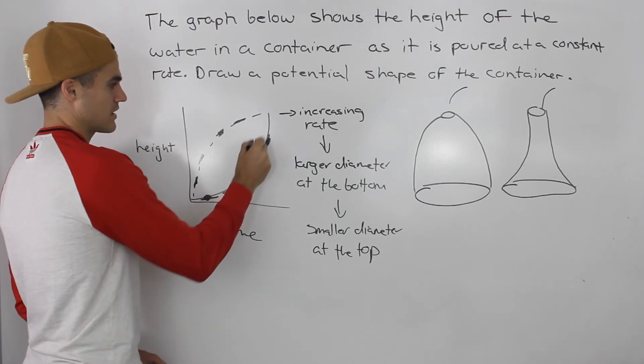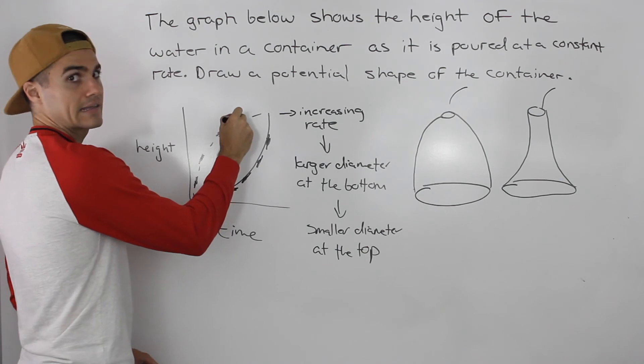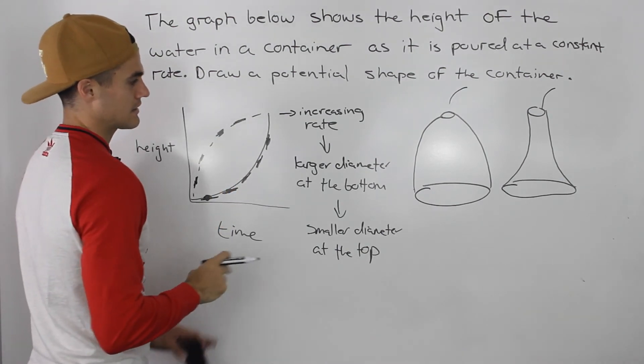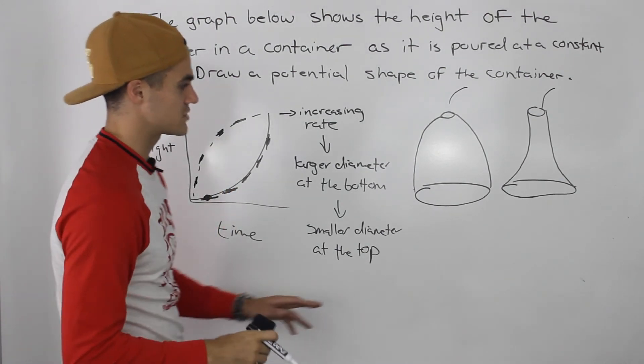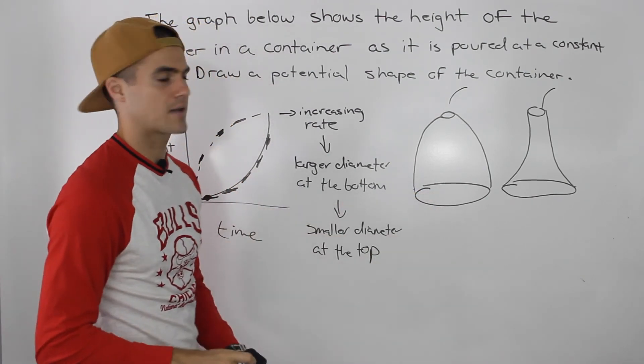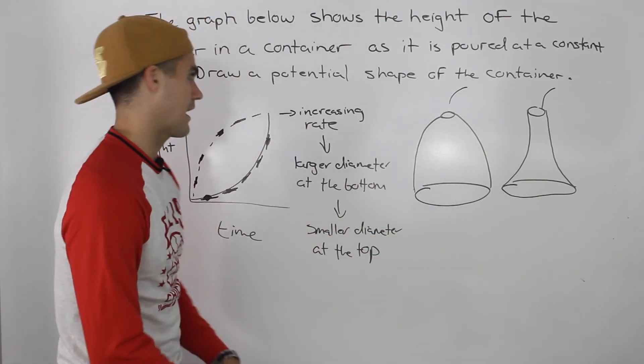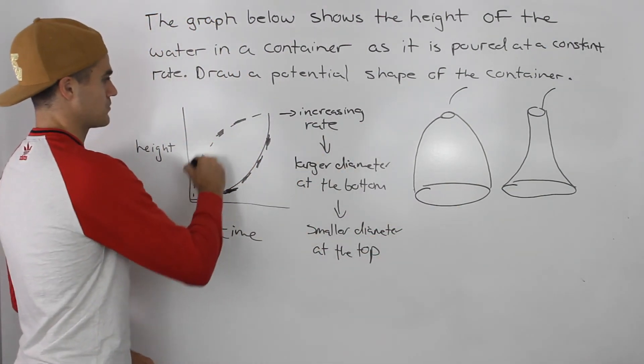Tangents are less steep, they get more steep, here they are more steep, and they get less steep. Meaning that it would be the opposite, you would have a smaller diameter at the bottom, and you'd have a larger diameter at the top. So these would maybe just be like flipped over, and that would be potential shapes for this graph.